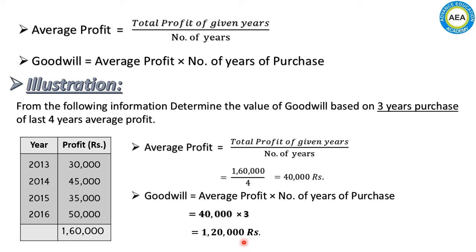So our goodwill is ₹1,20,000. This is our final answer. This type of question comes for four marks in the exam. This is a simple formula — make sure you memorize it. Next illustration.